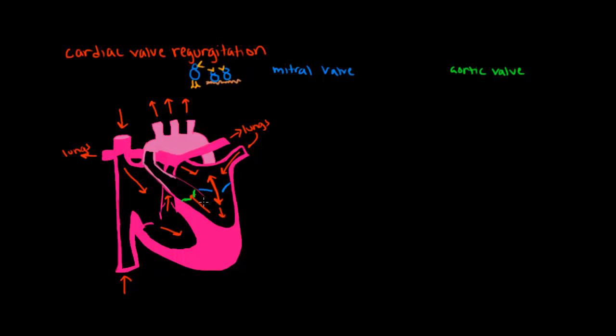In aortic valve regurgitation, there's a similar process. Instead of all of the blood flowing from the left ventricle to the aorta, some of the blood flowed backwards again into the left ventricle.